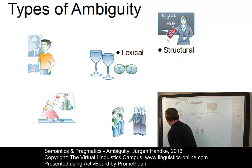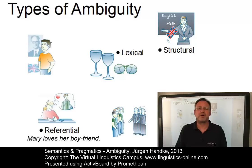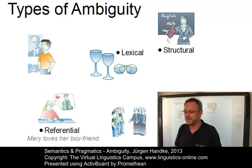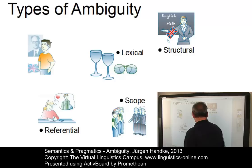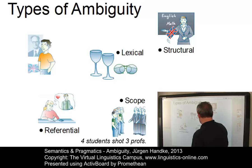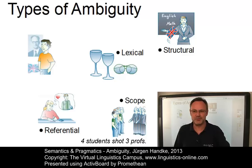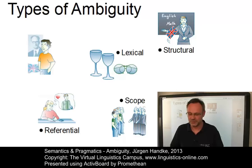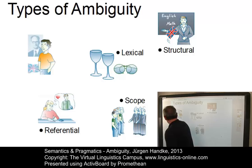Or take this case of referential ambiguity, as in 'Mary loves her boyfriend.' Who does she love — her own boyfriend or another girl's boyfriend? We don't know. A classic case of scope ambiguity can be seen in the example which denotes the fact that four students have shot three professors. But who shot who? Did all four students shoot three professors at the same time, or all together? We cannot tell, but we will discuss this case.